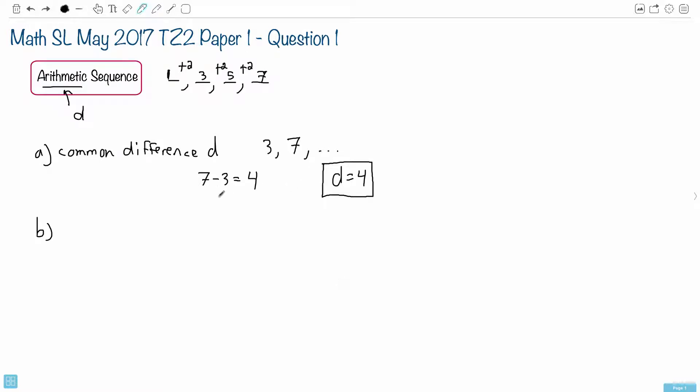In part B of this question, we're looking for the 10th term. The way that we denote terms is we put a U and a little subscript for which term it is. So in this case, if we want the 10th term, we put U₁₀.